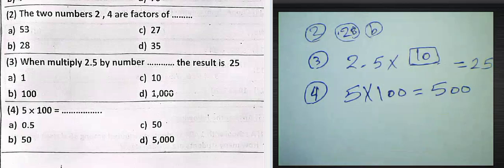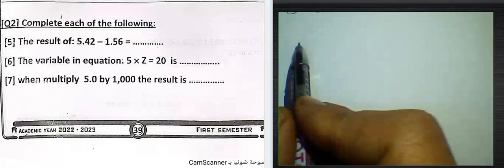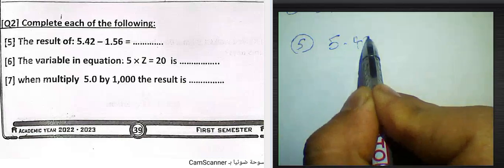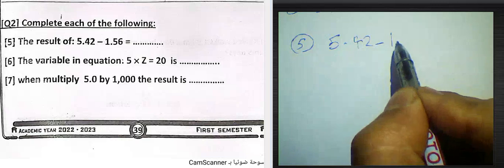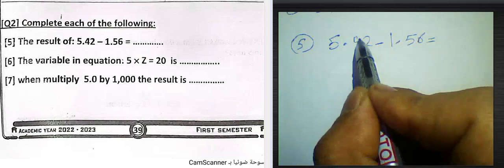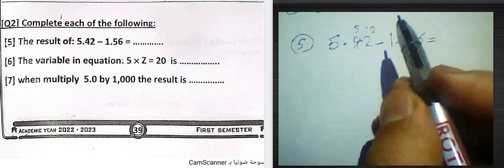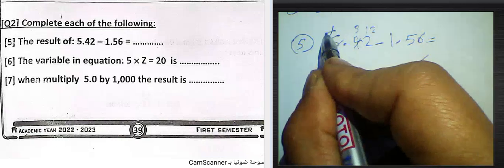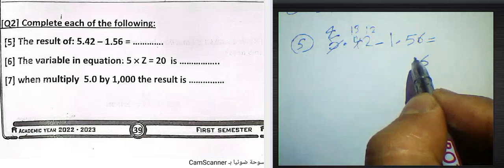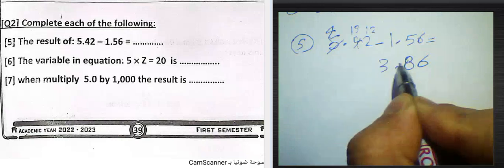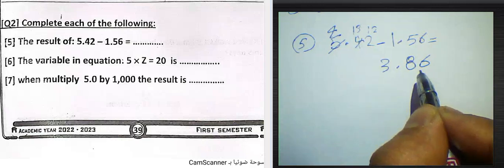Question number four: 5 multiply by 100 would be 500. Question number five: the result of 5.42 subtract 1.56. We must pour one, it would be 12. 12 minus 6 equals 6. 3 minus 5 we can't do, pour one. 10 minus 5 equals 8, 4 minus 1 equals 3. The result would be 3.86.